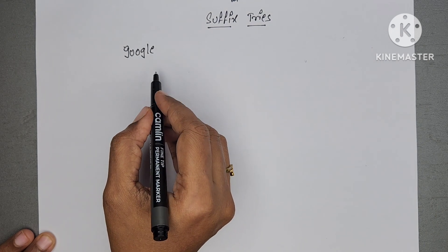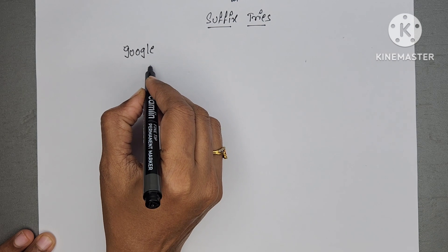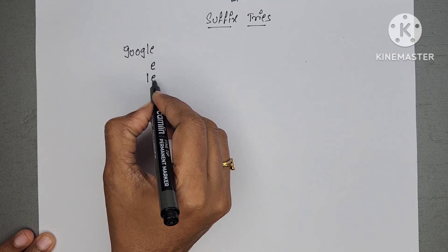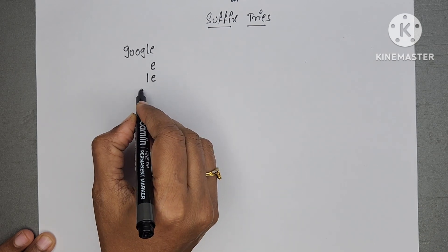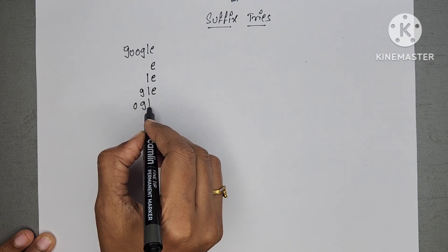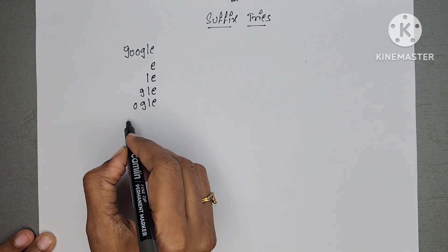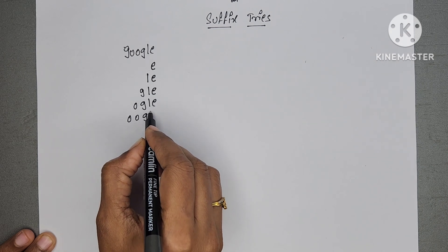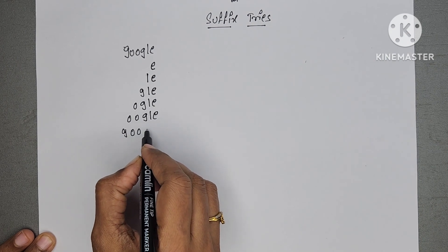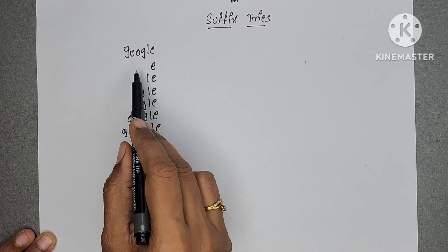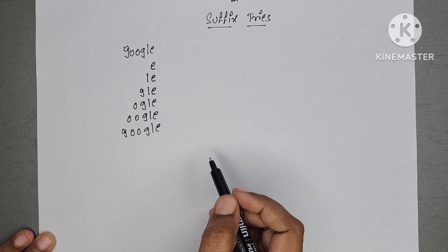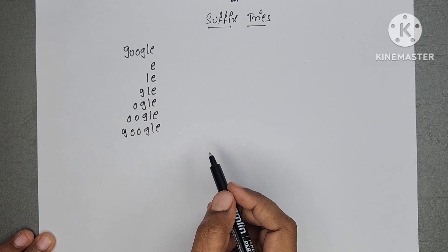We will take an example: GOOGLE. For this string, we have to write all suffixes. E is one suffix, LE is one suffix, GLE, OGLE, OOGLE, and one more — GOOGLE. Like this, we have to write all suffixes of a given string. For all these suffixes, we have to construct a compressed trie.